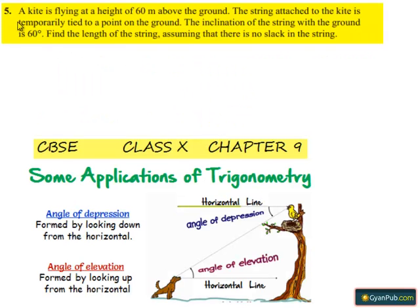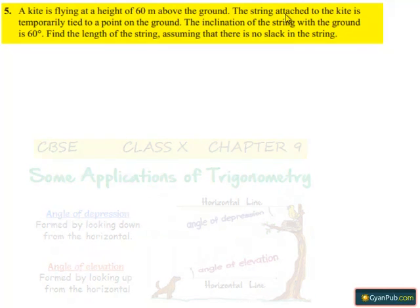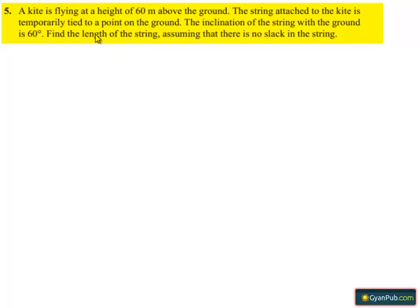Moving on to the fifth question. A kite is flying at a height of 60 meters above the ground. A string attached to the kite is temporarily tied to a point on the ground. The inclination of the string with the ground is 60 degrees. Find the length of the string. Assume that there is no slack in the string. Now moving on to the solution.